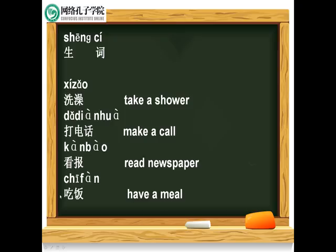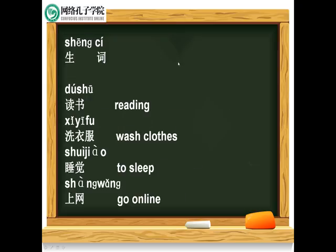吃饭，have a meal. 他在做什么呢? What is he doing? 他在吃饭。He is having a meal. We continue to learn. 读书。他在做什么呢? What is he doing? 他在读书。He is reading. Next one: 洗衣服，wash clothes. 他在做什么呢? 他在洗衣服。He is washing clothes. 很好。